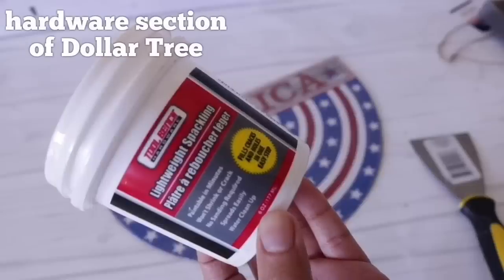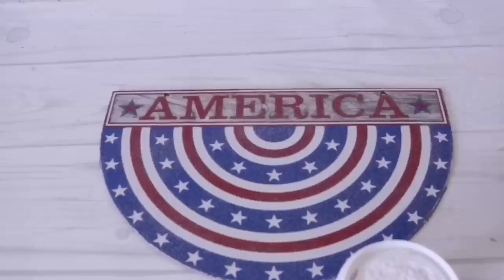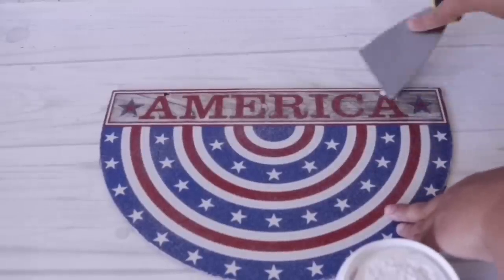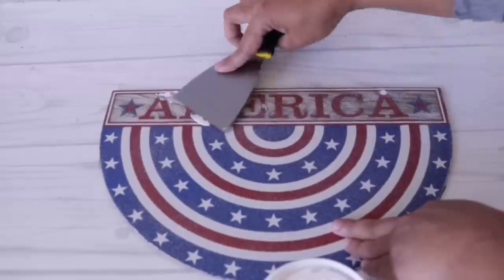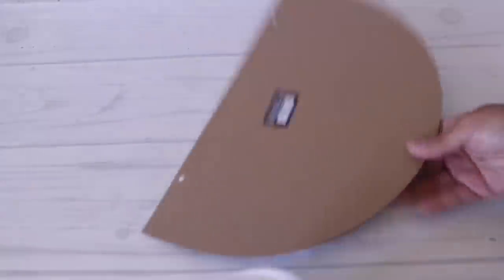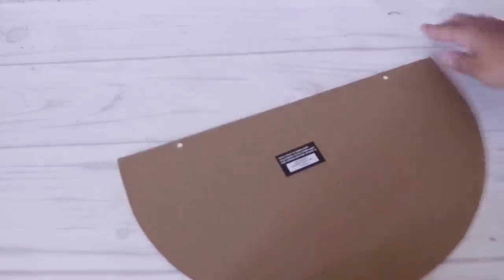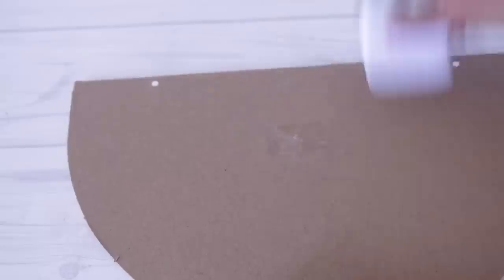To seal off those little holes I used my Dollar Tree lightweight spackle and I added it to these little holes. I do this in my tutorial where I show you how to transfer fonts without a Cricut and I am going to reference that later on for this same tutorial. I'm going to add a generous amount and make sure it's not seeping through the back and it's covering everything. I'm removing the sticker using my Cricut scraper tool and sanding it down just a bit with my sanding sponge.